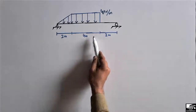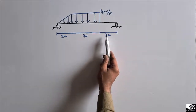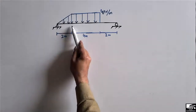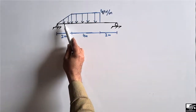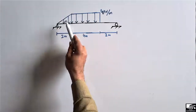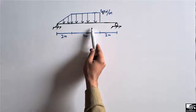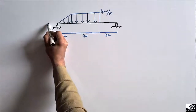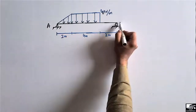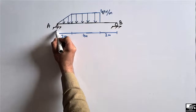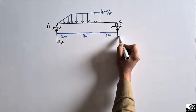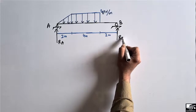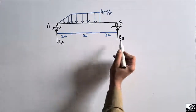This simply supported beam has a total length of 8 meters and it carries a triangular load and a rectangular load. We consider support A and support B, and we are going to find out their support reactions RA and RB.